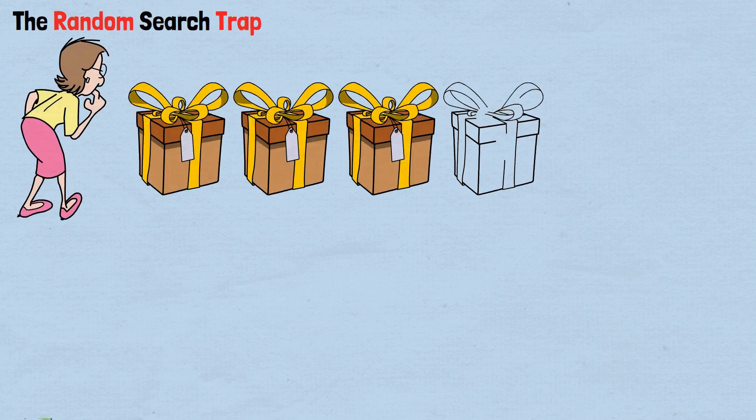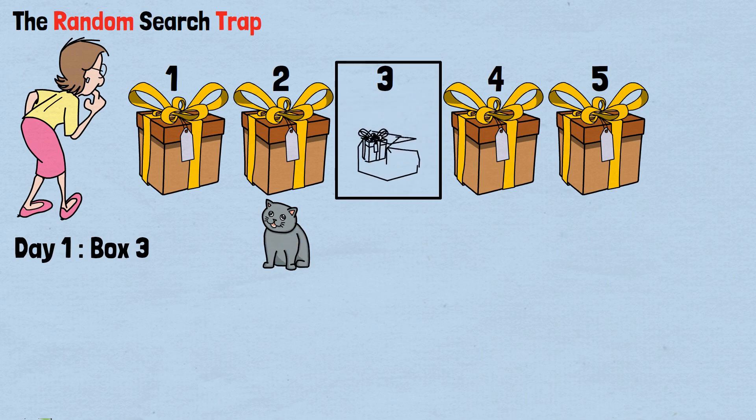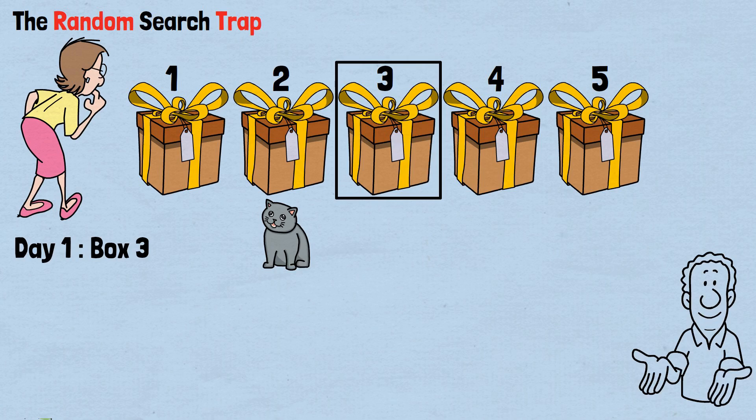The random search trap. Your first instinct might be to search randomly, hoping luck will favor you. Let's see why this approach is mathematically doomed. Imagine on day 1, you randomly choose to search box 3. Unknown to you, the cat is actually hiding in box 2. You open box 3, find nothing, and shrug off the miss. Here's where the mathematical trap reveals itself.